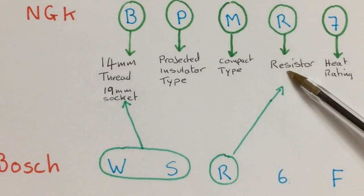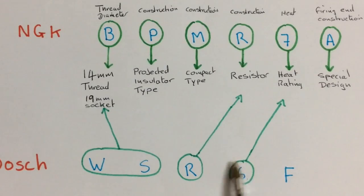R basically means resistor. The number 6 relates to its heat rating. So it's still a mid-range.